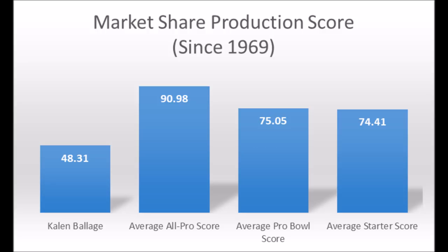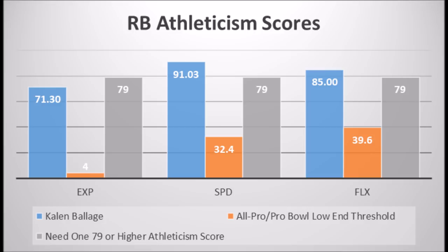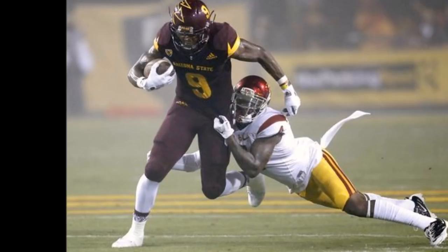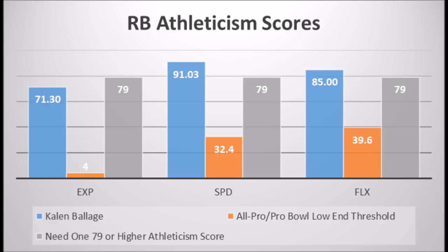However, that cannot be said for his athleticism testing. He had a 71.30 explosive lower body strength score, a 91.03 speed score, and an 85.85 flexibility score. Based on my data since the 1999 NFL draft class, pretty much every single all-pro or Pro Bowl running back had at least one athleticism trait of 79 or higher. When it comes to Kalen Balich, he has two traits — his speed and his flexibility — both at 79 or higher. He is an all-pro or Pro Bowl athlete in terms of his skill set.